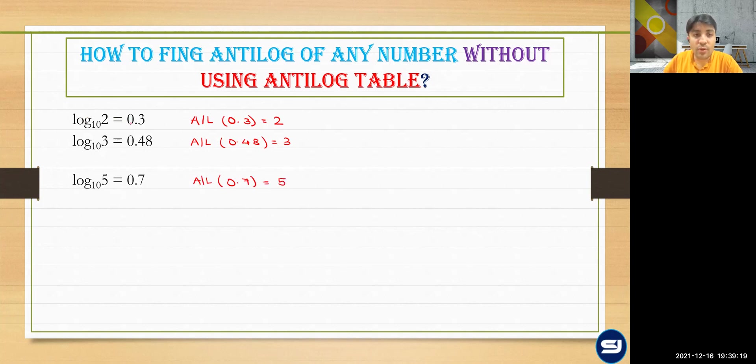Meaning if you know the log values, then the values on the right, the antilog value for that will be equal to the corresponding number.